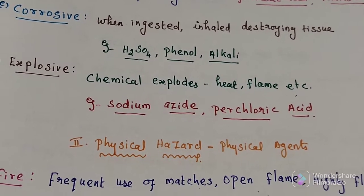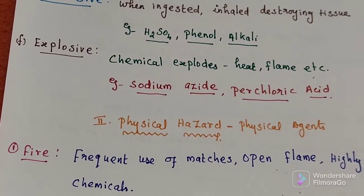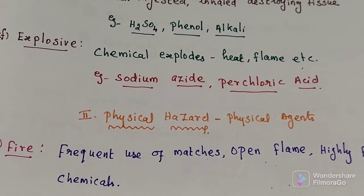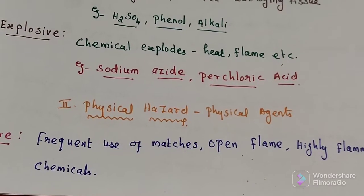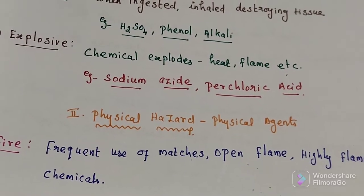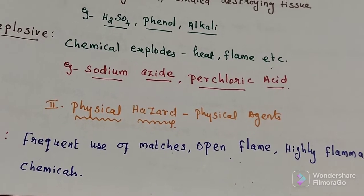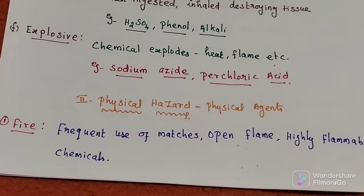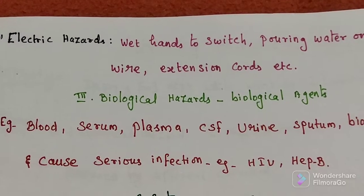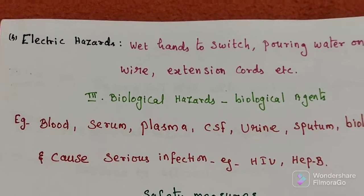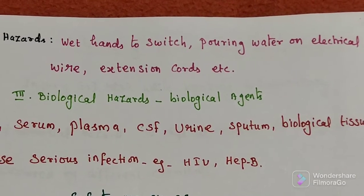The next category is physical hazards — hazards acquired by a physical agent. There are two types. First is fire, due to frequent use of matches, open flames, and highly flammable chemicals, which is responsible for fire risk in the laboratory. Second is electrical hazard, which can occur from touching switches with wet hands or pouring water on electrical wire or extension cords.